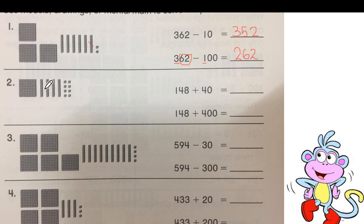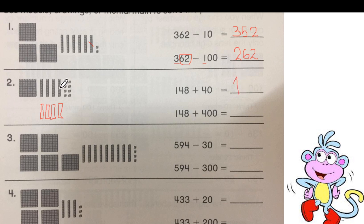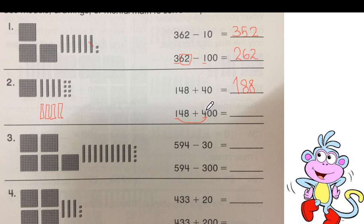Let's go to the addition question. 148 plus 40. We need to add 4 tens. Hundreds stay the same. How many tens will I have now? 1, 2, 3, 4, 5, 6, 7, 8 — I will have 8 tens now. What happens to ones? They stay the same — 8 ones. Let's do the addition using mental math. 1 plus 4. If I have 1 apple and you give me 4 more, I will have 5 apples. When I add the hundreds, what happens to tens and ones? They stay the same.